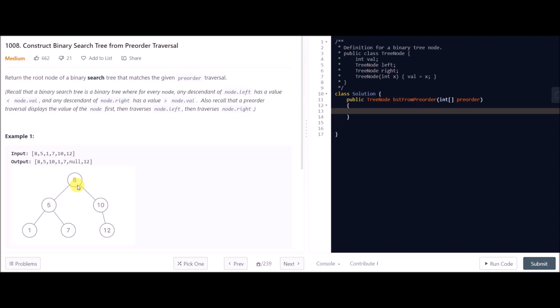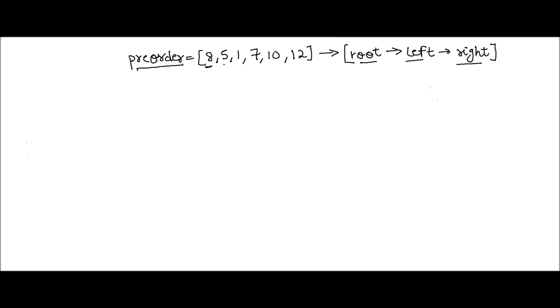I'll be solving it in linear time complexity. Let me jump on to the explanation first and then we'll code the solution. Pre-order traversal visits the root first, then the left part of the tree, then the right. We are given the pre-order traversal of a BST and we have to construct the tree and return its root node.